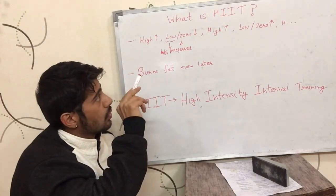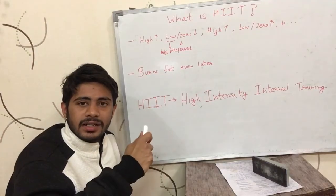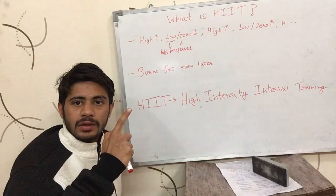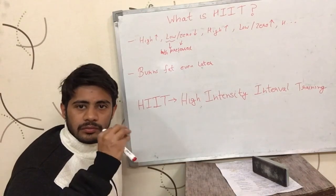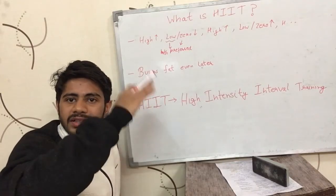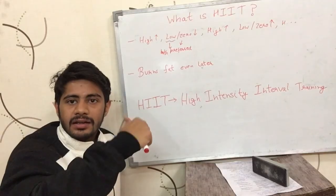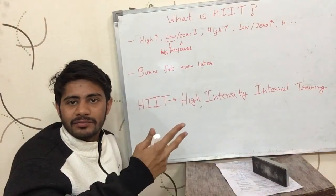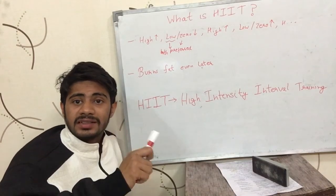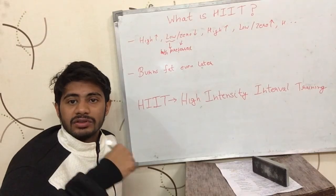You can do high intensity interval training with any sort of physical movement, not necessarily running. You can do it running on stairs — run up at your maximum speed, then come down walking. In my previous video, I gave an example of moving a hand at maximum intensity and then at low intensity. However, moving just one hand is not a good exercise because it does not involve your whole body. Exercises like running or skipping are better because they involve your full body.